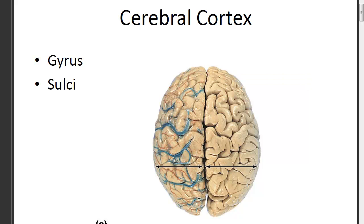Here's the longitudinal fissure that divides the cerebral cortex into left and right hemispheres. The cerebral cortex is our thinking portion of the brain — we call it our thinking cap because it sits on top of some central brain structures that we'll talk about.